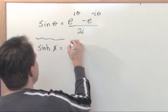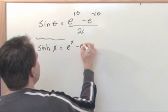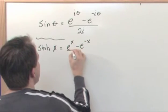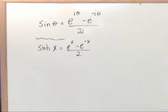It's written as e to the x minus e to the minus x over 2, so you see that right there.